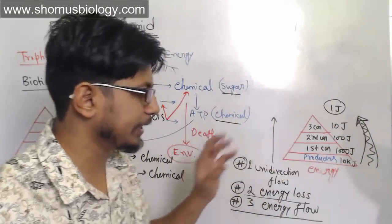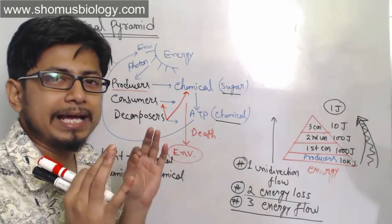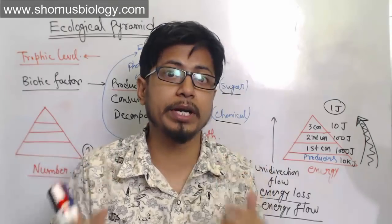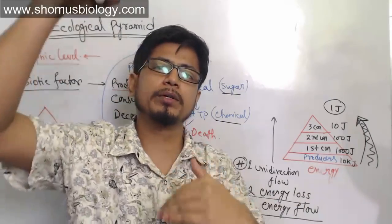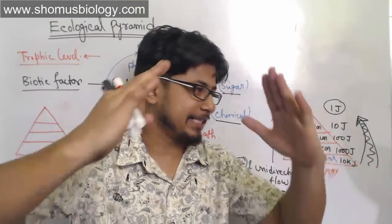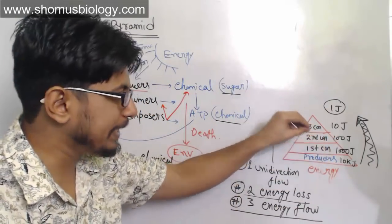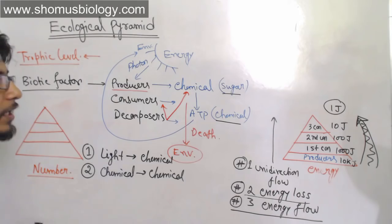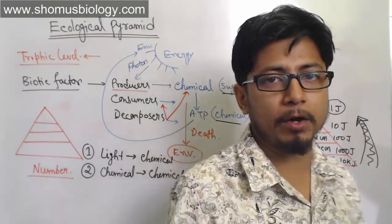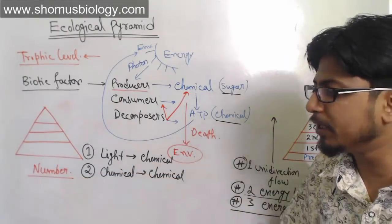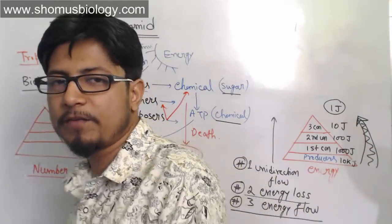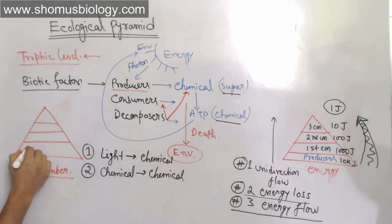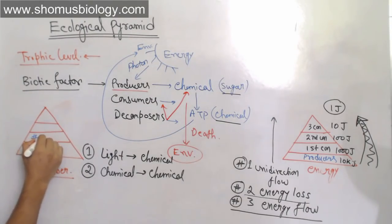The energy pyramid will always remain upright — the base is broadest at the producer level and gets narrower toward the top as we go up trophic levels. Now, if we consider the pyramid of numbers, it may not always match the energy pyramid. The pyramid of numbers shows total number of producers, primary consumers, secondary consumers, and tertiary consumers at each level.